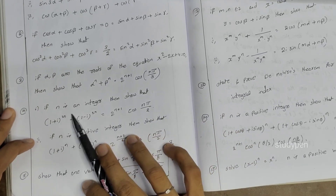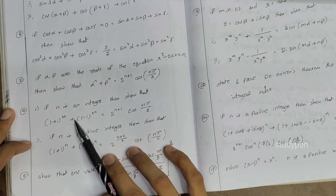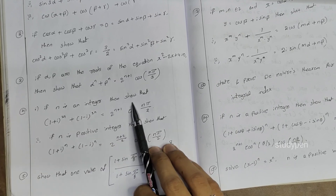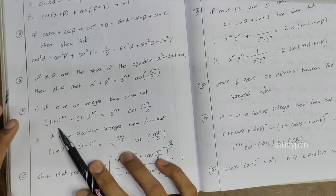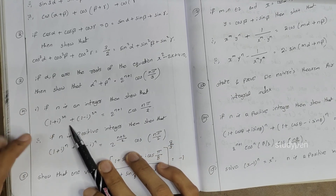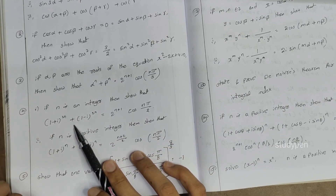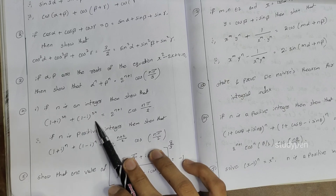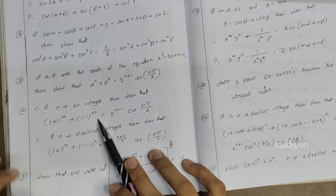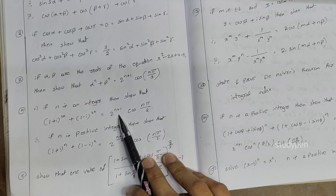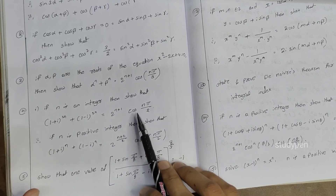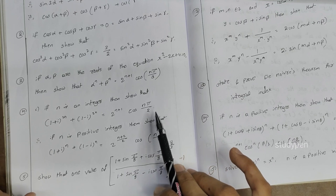And the fourth question: if n is an integer, then show that (1 + i)^(2n) + (1 − i)^(2n) is equal to 2^(n+1) cos(nπ/2).